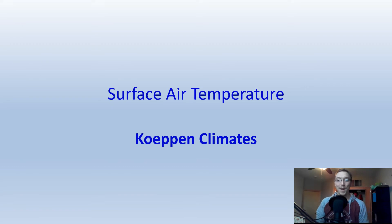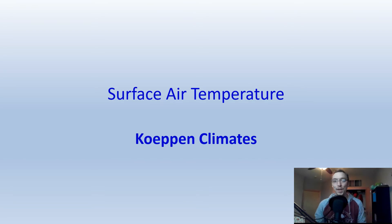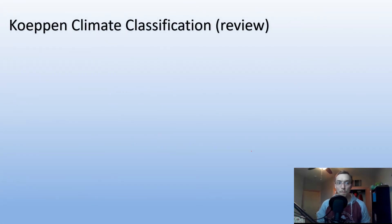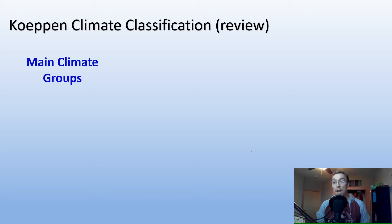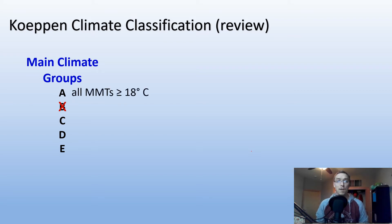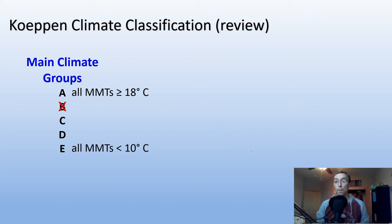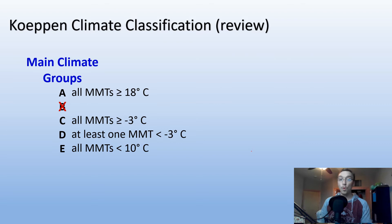Now let's review Köppen climate classifications and how they can be used to describe air temperature. We have our main groups: A, B, C, D, and E. We're not going to worry about B here since it's driven primarily by precipitation. For A, all mean monthly temperatures are greater than or equal to 18°C. For E (polar climates), all mean monthly temperatures are less than 10°C. For C, all mean monthly temperatures are greater than or equal to −3°C. For D, at least one mean monthly temperature is less than −3°C.